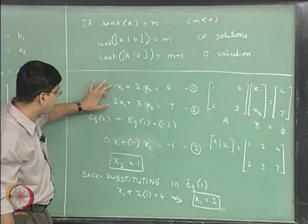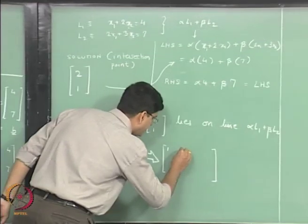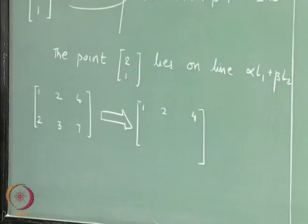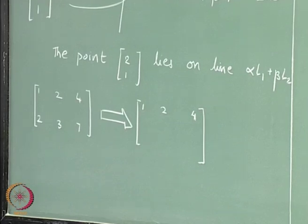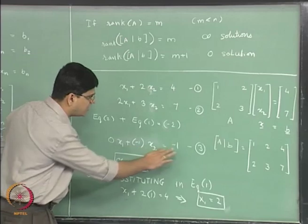Now what we are left with is equation number 1 and equation number 3, and we will try to solve equation 1 and 3 together. That is exactly what we did in the back substitution step. So equation 1 is 1, 2, 4 in the matrix A bar B.